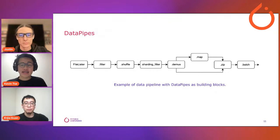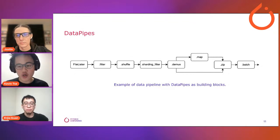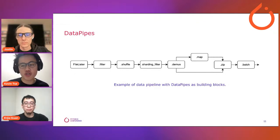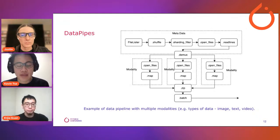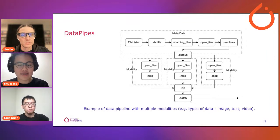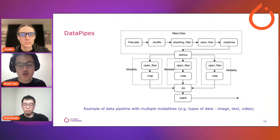Here's an example of what a data pipeline looks like using built-in data pipes. First you list files on your file system, filter them, shuffle them, and shard them. Note we have a sharding filter data pipe — this is the starting point at which each worker will process different samples if you're using multiple workers or nodes. Here's another example with multiple modalities — different types of data: images, text, video. You can split your data, process them differently, convert them to tensors, and combine them as a final output for training.